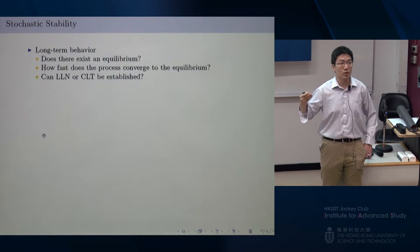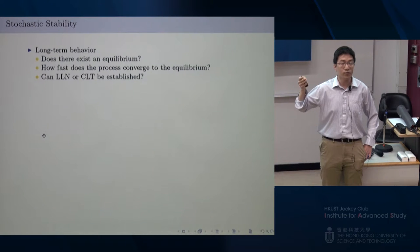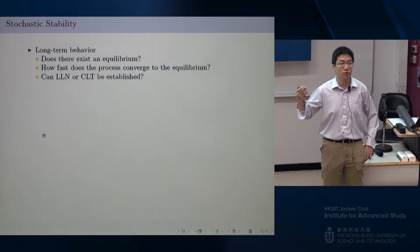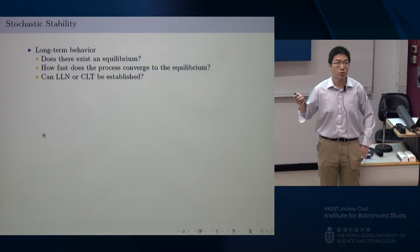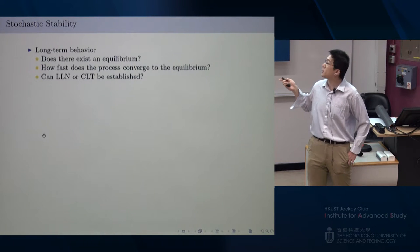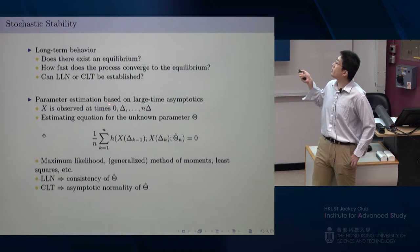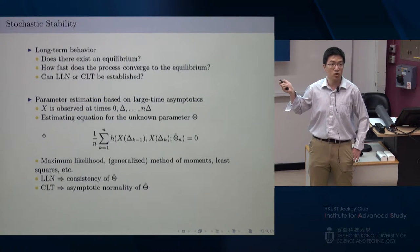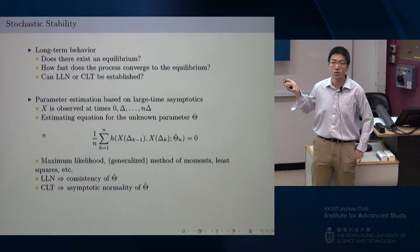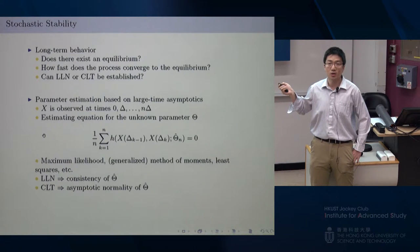The third question is a follow-up: if the equilibrium does exist, can we establish some sort of law of large numbers or central limit theorem for this type of process? The reason we are interested in stochastic stability and long-term asymptotics is that many existing statistical methods for parameter estimation of these processes require large numbers or CLT results to establish validity.